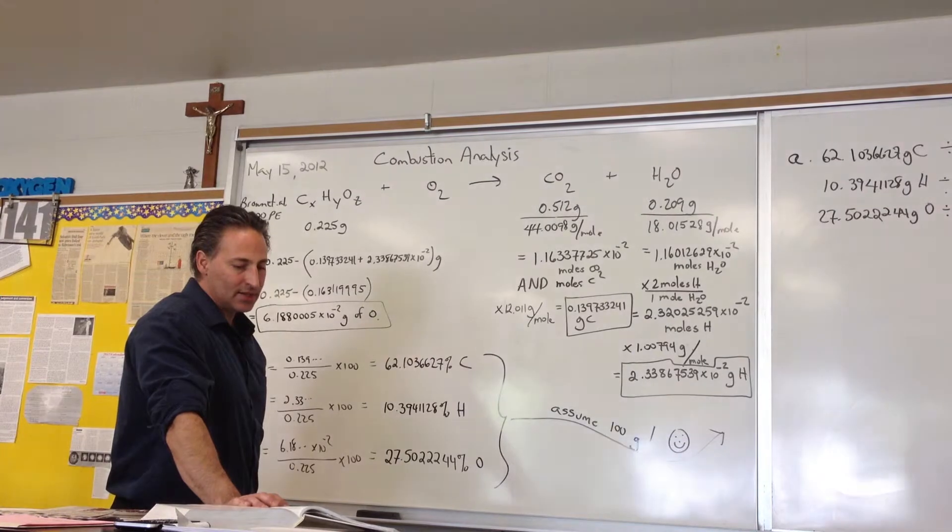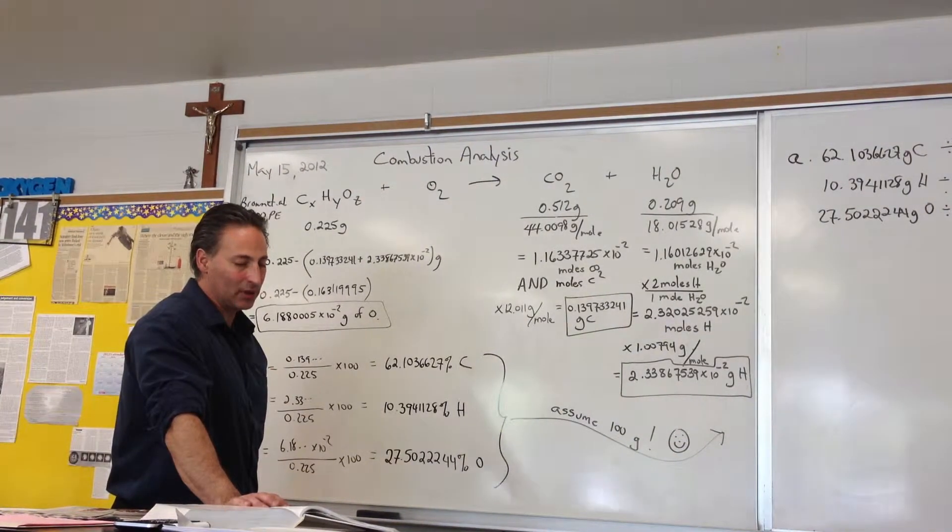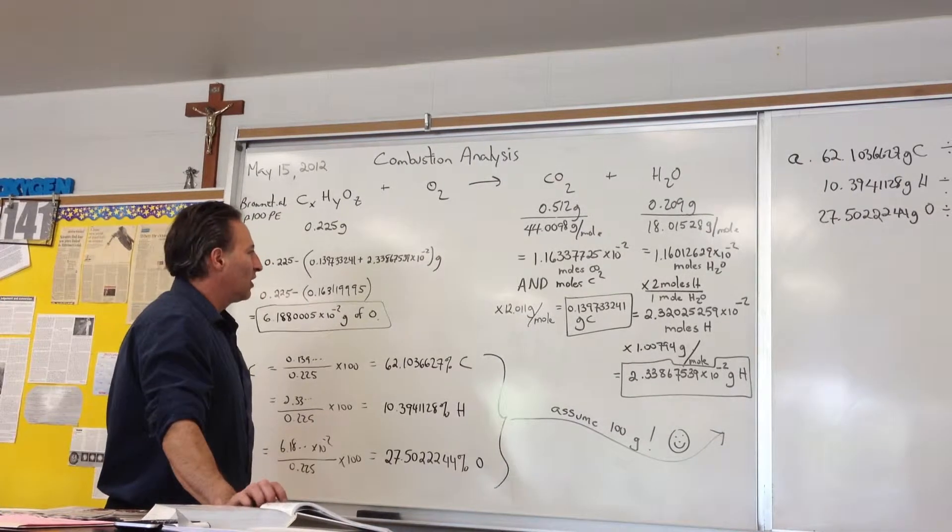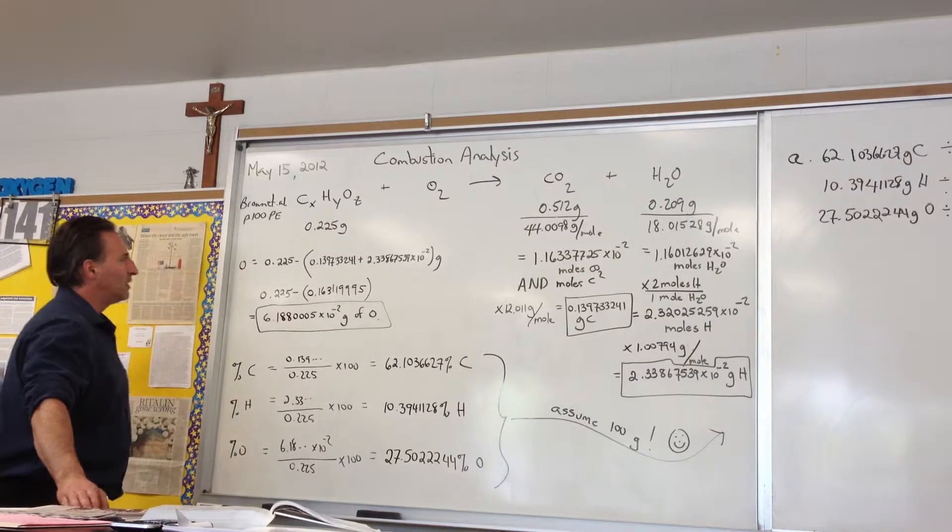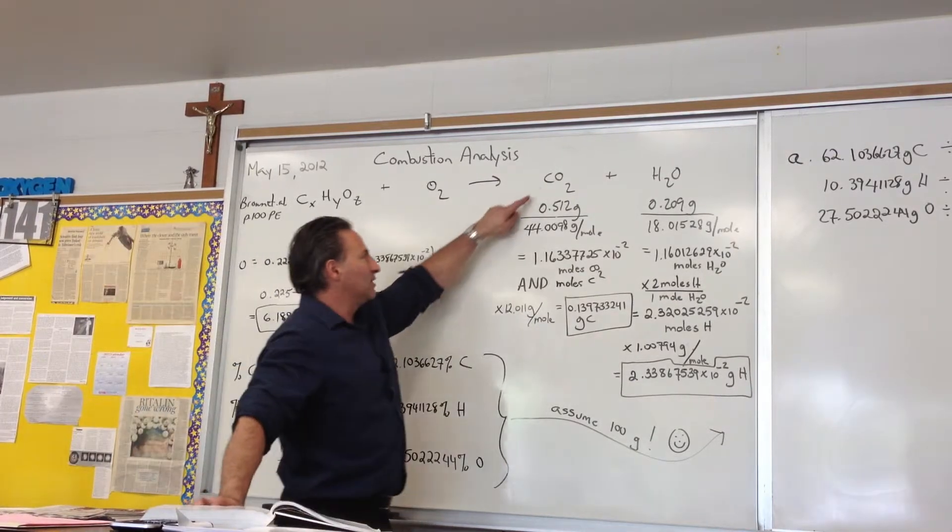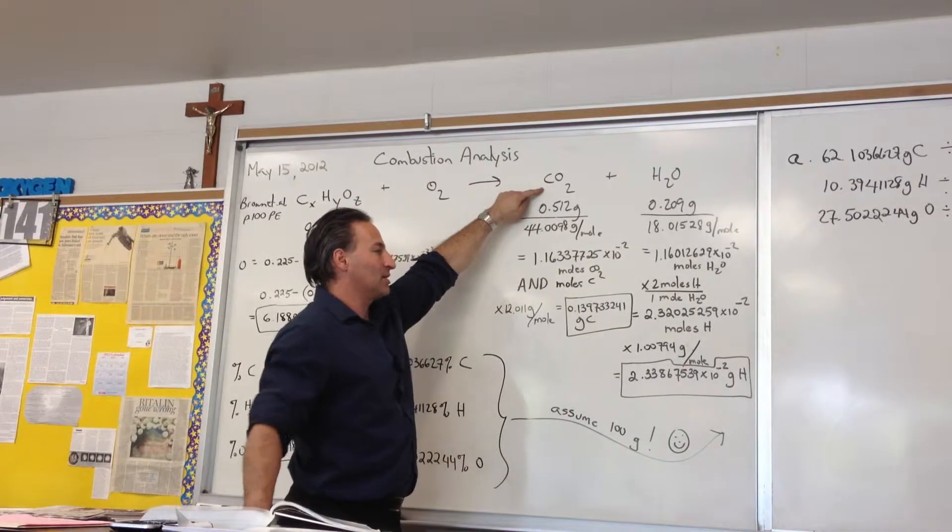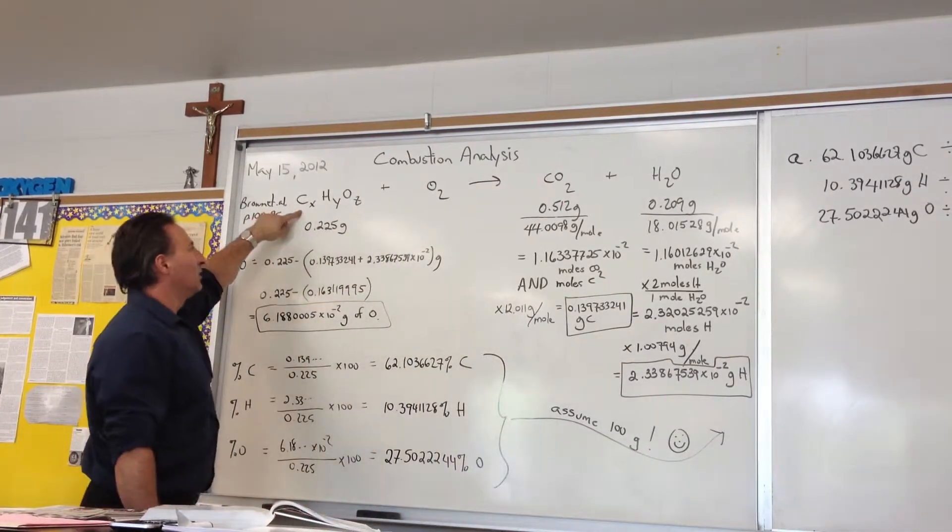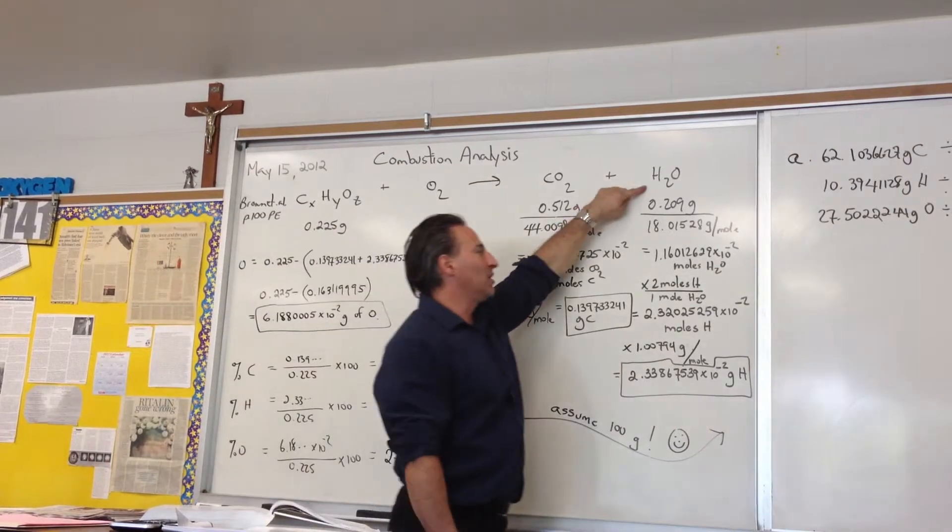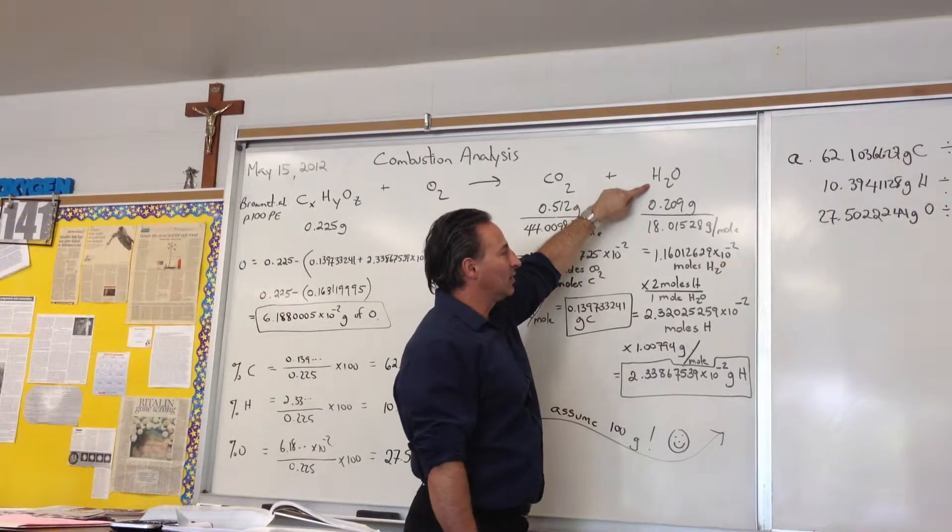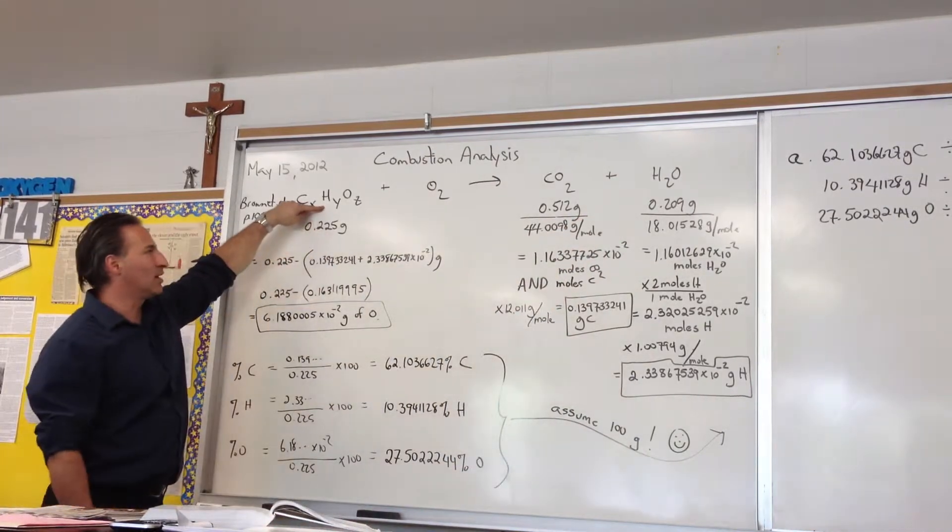They also say caproic acid has a molar mass of 116 grams per mole. What is its molecular formula? The first step in combustion analysis is to understand that all the carbon appearing in the carbon dioxide comes from the unknown compound we're burning. Similarly, all the hydrogen appearing in the water comes from the hydrogen in our unknown compound.